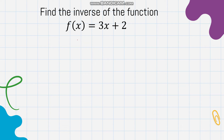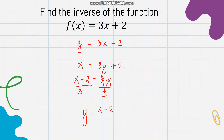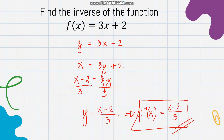Next example: f(x) = 3x + 2. We change f(x) to y: y = 3x + 2. Then interchange variables: x = 3y + 2. Solve for y: move 2 to the other side to get x - 2 = 3y, then divide both sides by 3. We get y = (x - 2)/3, so f⁻¹(x) = (x - 2)/3. This is the inverse of f(x) = 3x + 2.